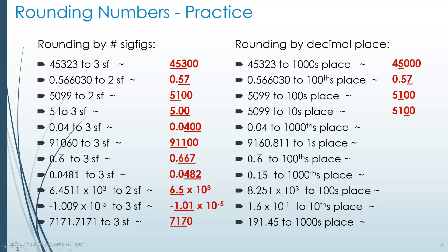0.04 to the thousandths place: the thousandths place isn't even written here, so we fill it in with a zero to show that zero is significant, giving 0.040. Next, 9160.811 to the ones place: the ones place has a 0. The 8 after the decimal tells us to round the 0 up to 1, and everything to the right of the ones place is dropped. We don't need to write the decimal point or any digits that were formerly to the right of it.